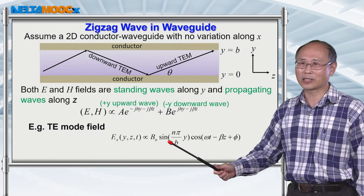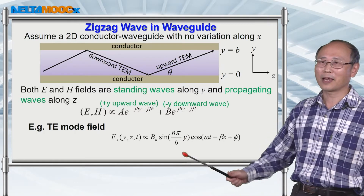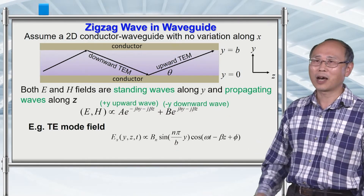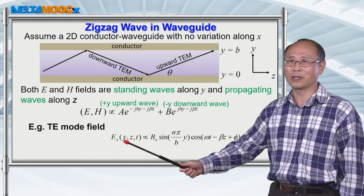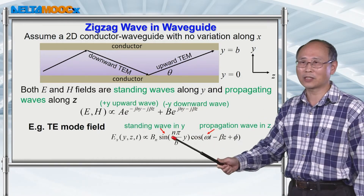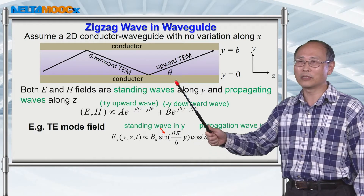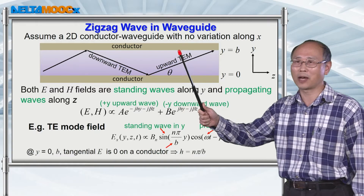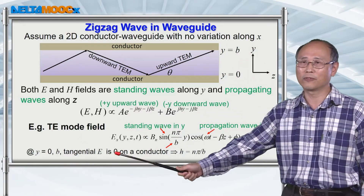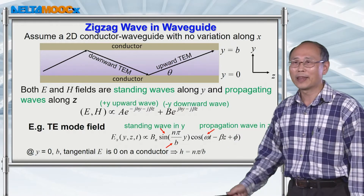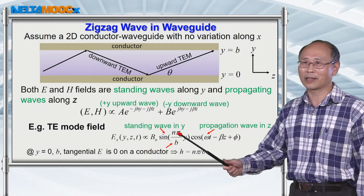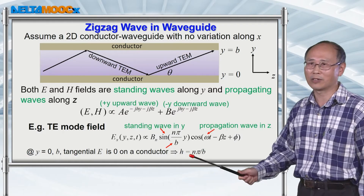I write down the standing wave as a sine function multiplied by y. I wrote it as a sine because this field is the tangential component of the electric field in this structure. So this standing wave component has to go to zero at both conducting boundaries. Setting boundary conditions at y = 0 and y = b equal to zero for this tangential component of electric field, you get sin(nπ/b · y). This coefficient nπ/b is the eigenvalue of the waveguide.